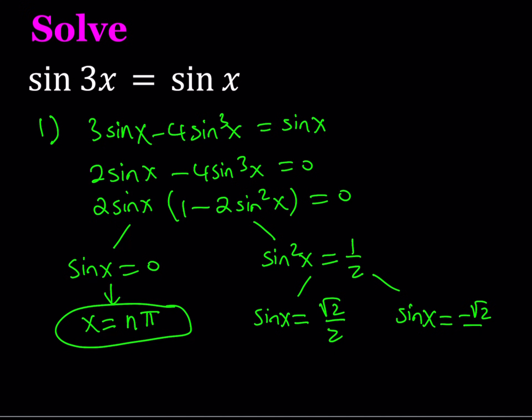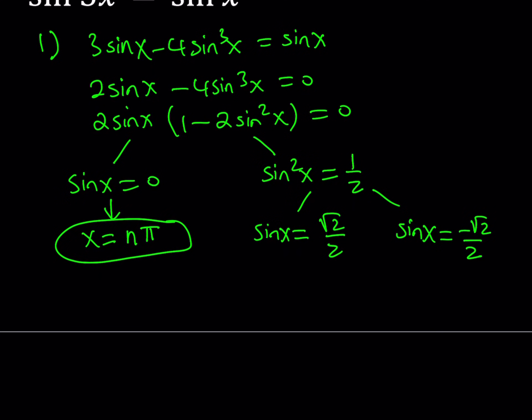Obviously there are no extraneous solutions here because we did not square both sides or something, we just used a formula. Now, from here we get a bunch of different solutions. For example, if sine x is equal to root 2 over 2, x can be written as pi over 4.